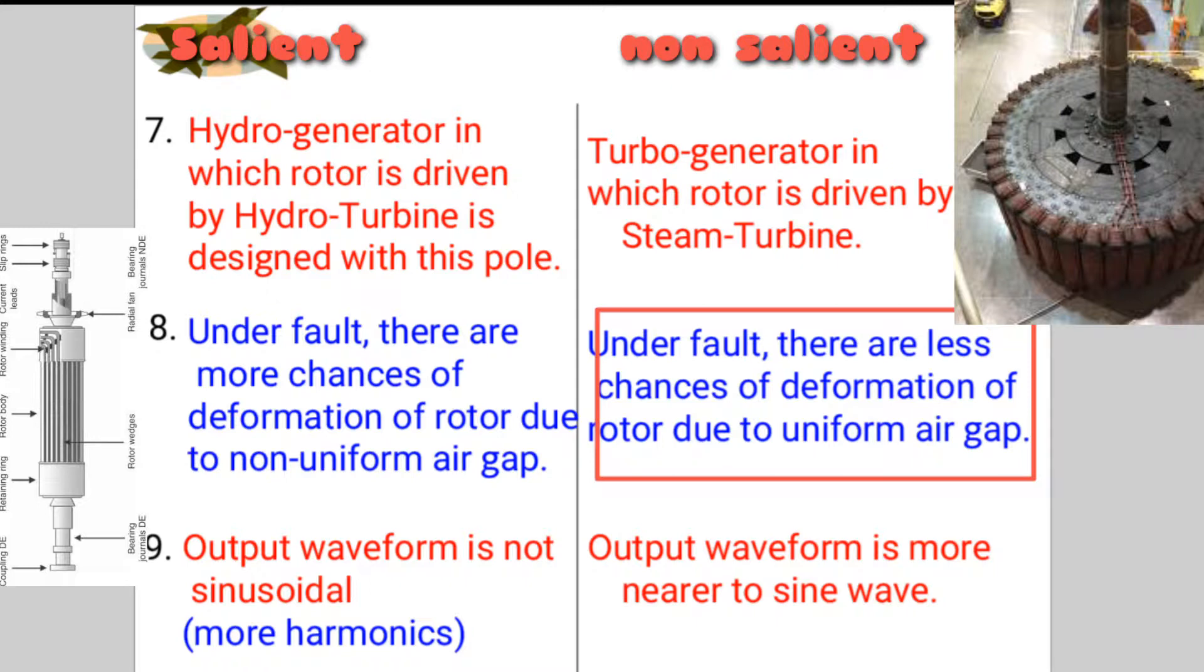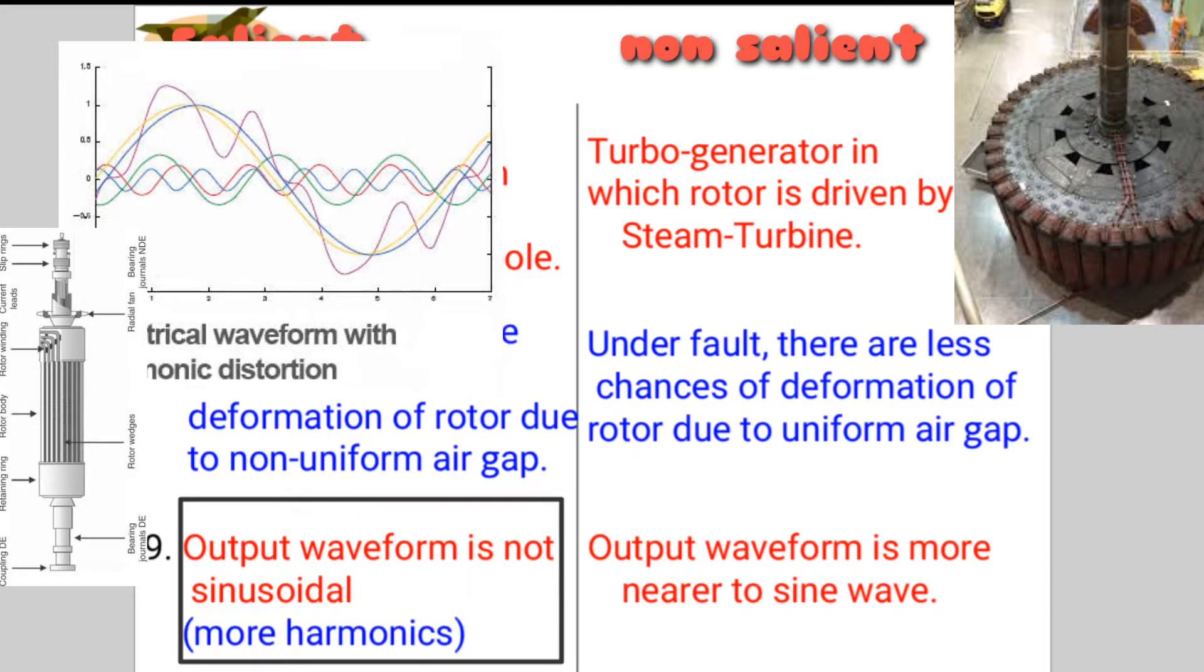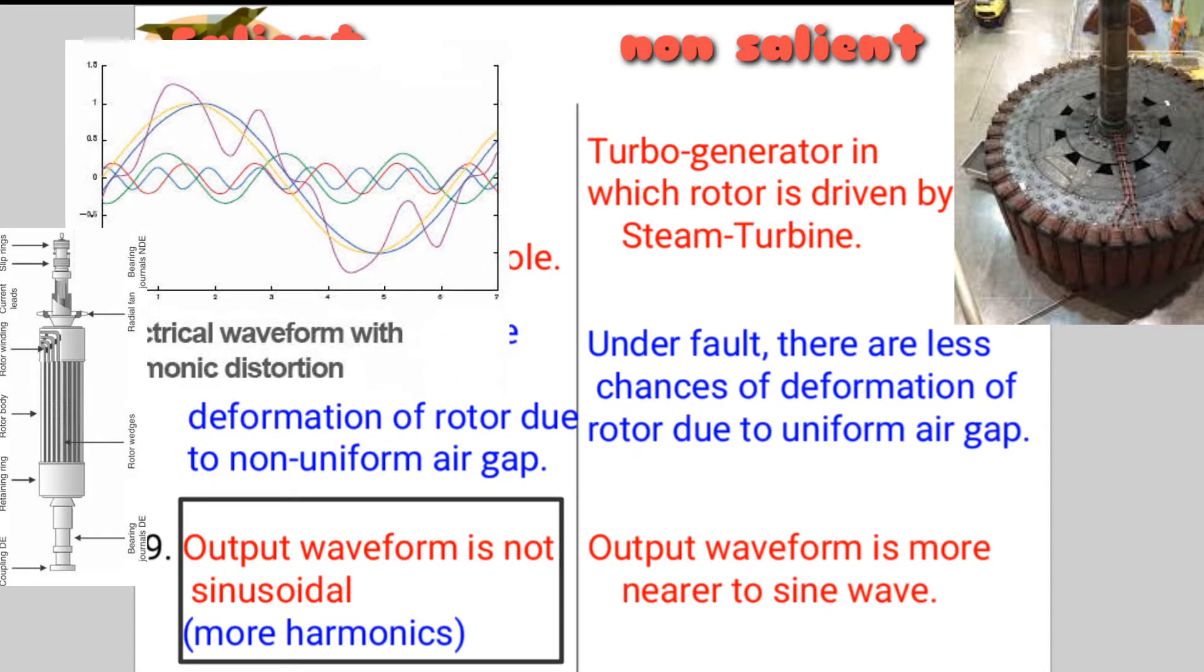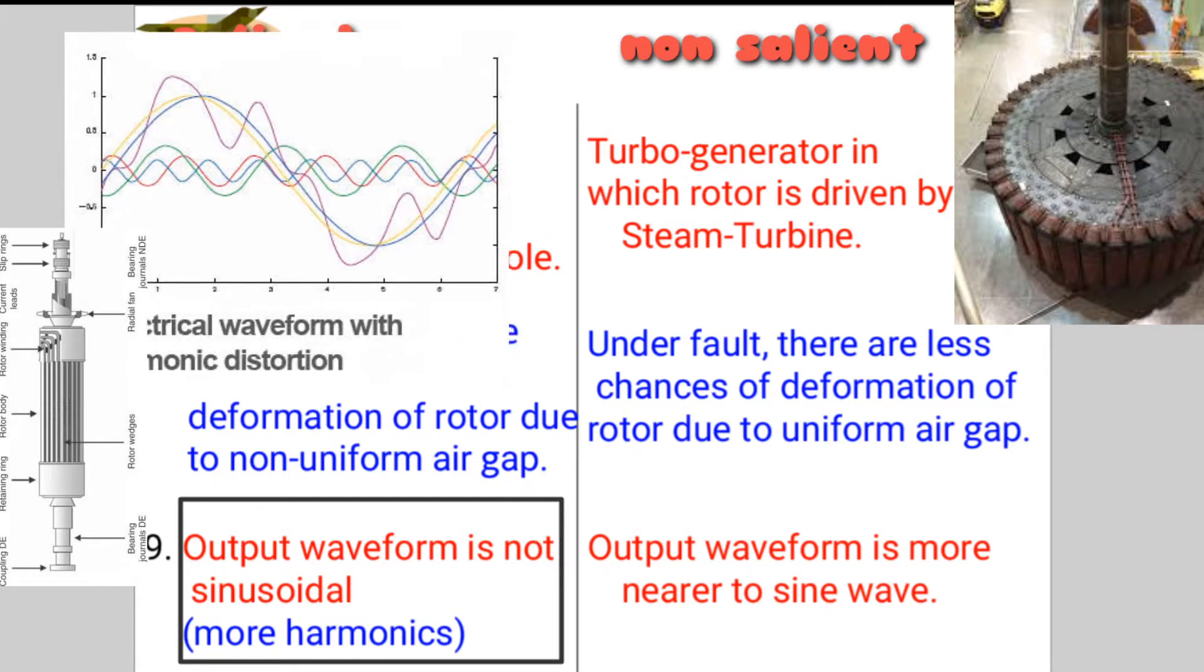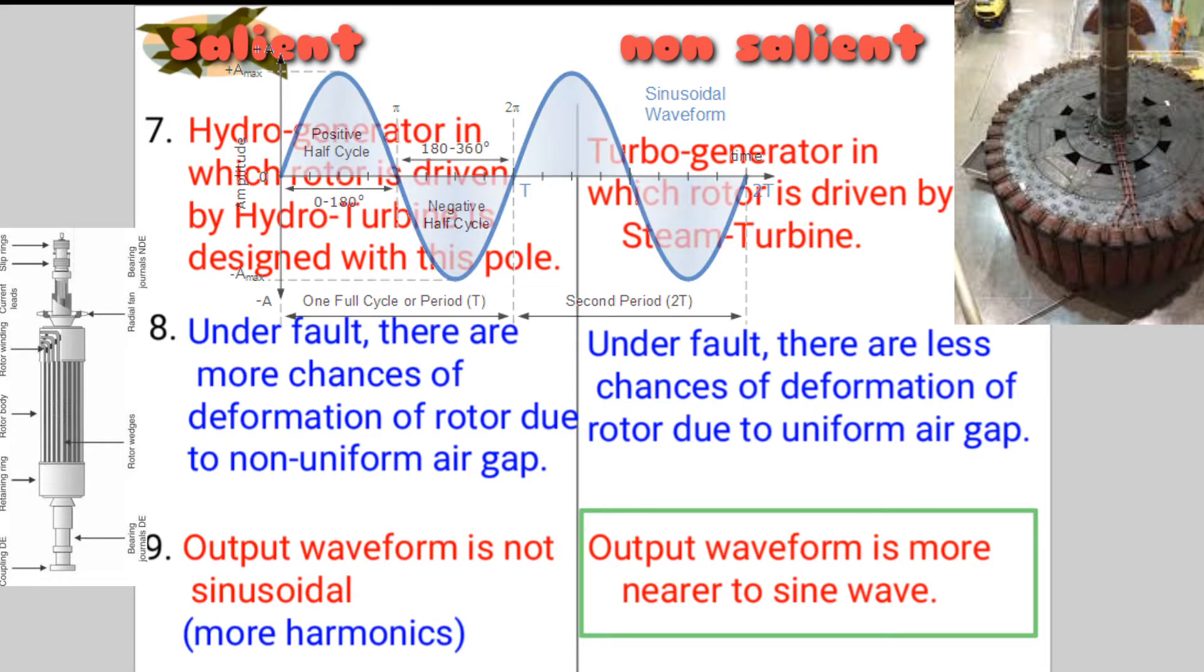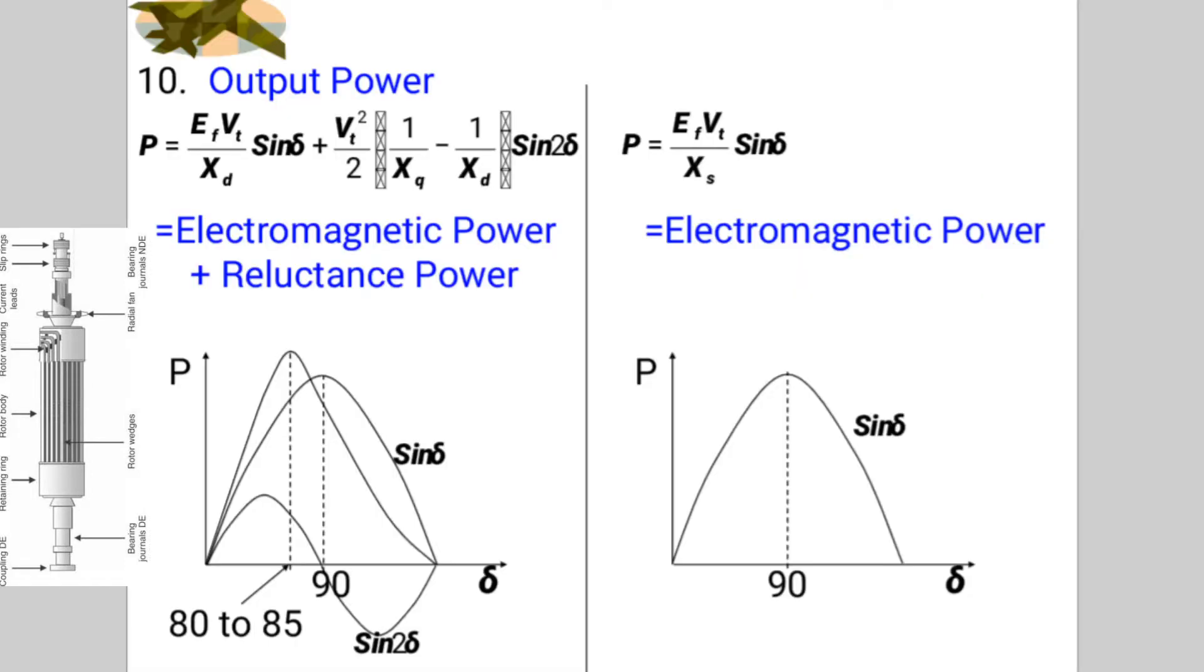Under fault, there are less chances of deformation of rotor due to uniform air gap. Output waveform is not sinusoidal, more harmonics, while in this output waveform is more nearer to sine wave.